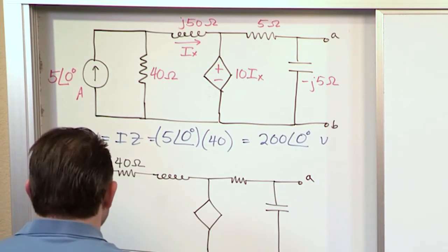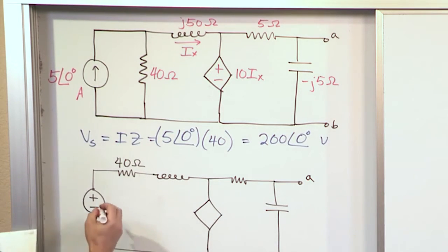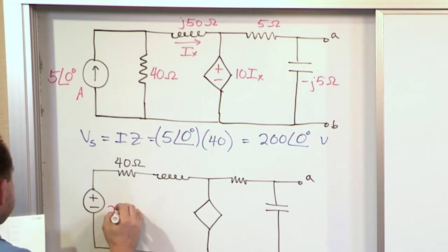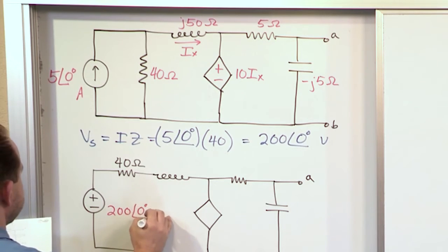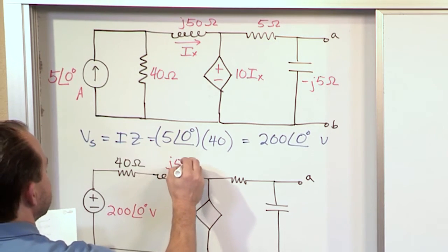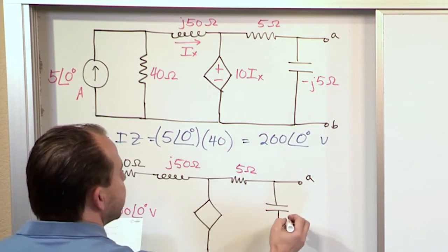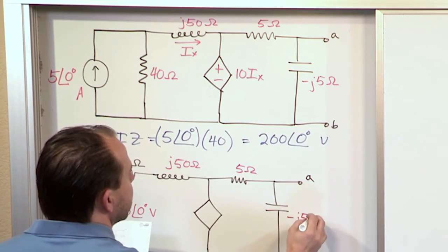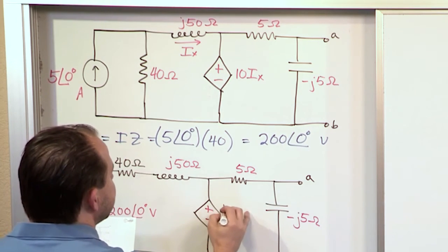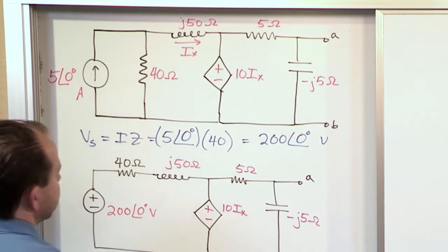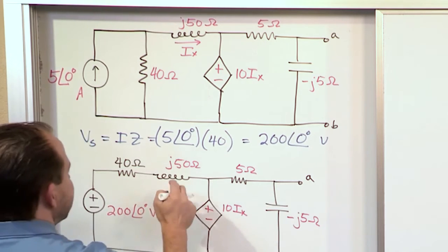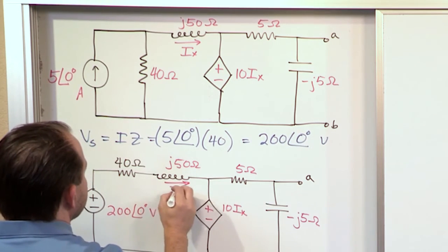So let me label everything else, and then we'll rock and roll and get it all done. So this voltage source now is 200 at an angle of 0 degrees volts. This is the same as it was, J50 ohms. This is 5 ohms. This is negative J5 ohms. And this is 10 times I sub x. Now I sub x is the exact same as it was before. It's the current flowing through this inductor.